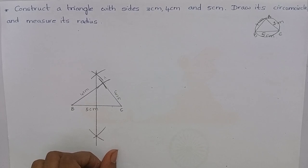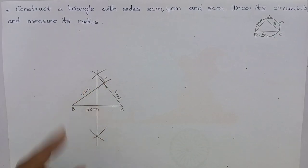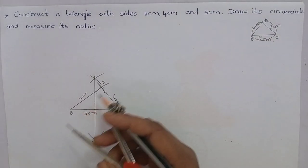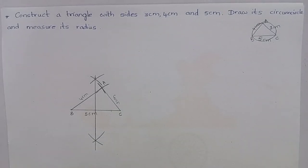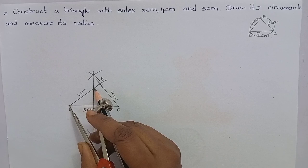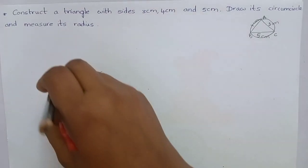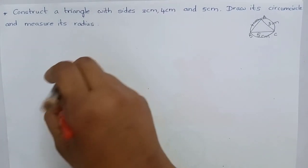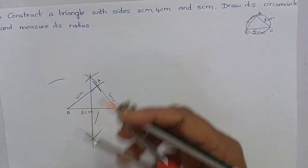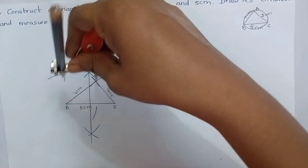Now, let's construct a perpendicular bisector for AB. To construct a perpendicular bisector for AB, we have to take more than half of AB. This is more than half of AB. From the point B, mark an arc from the point A.